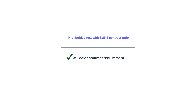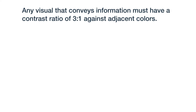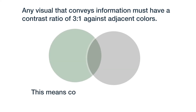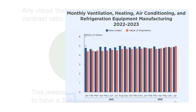Next, let's go over the contrast requirements for visuals. This includes infographics, charts, icons — really any visual that conveys information must have a contrast ratio of 3 to 1 against adjacent colors. This means colors next to each other need to have a 3 to 1 ratio.